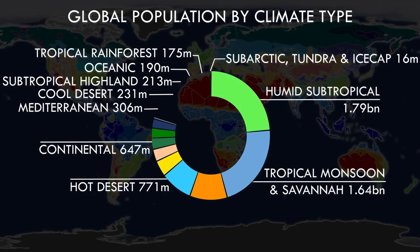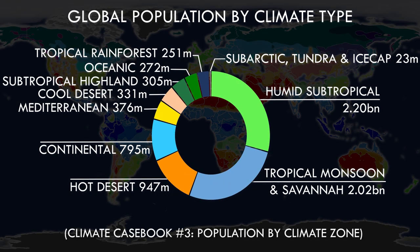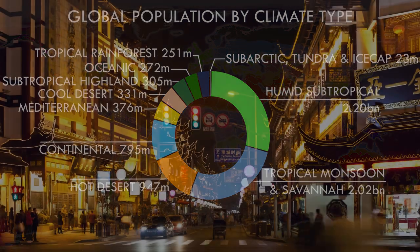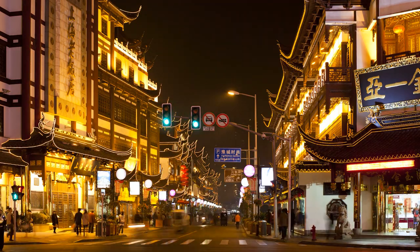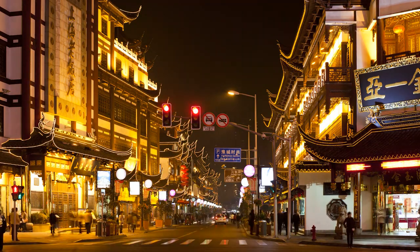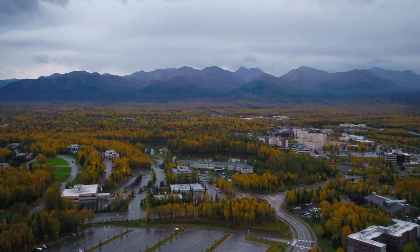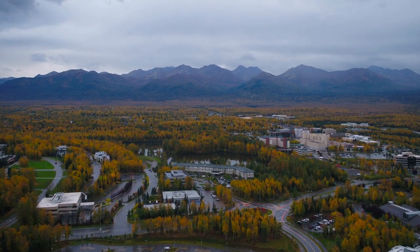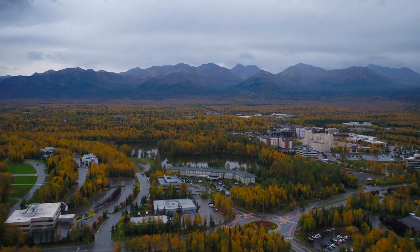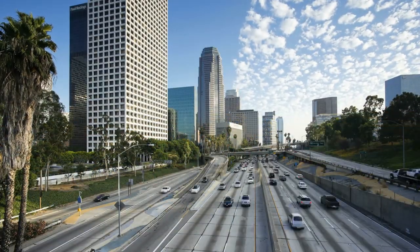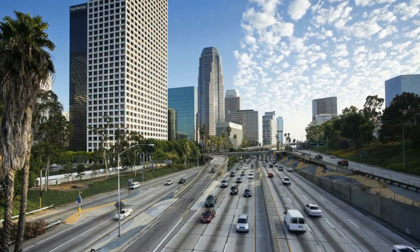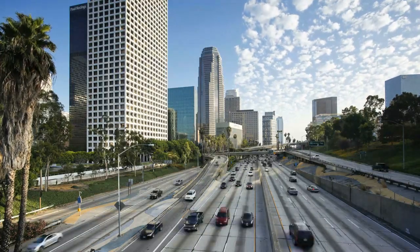Following the episode on population distributions across climate zones, there were a number of requests to reveal perhaps the most telling of statistics – how climate might determine the number of people that can be supported in a given unit area. This would reveal which climate zones are favourable to human settlement and which ones are adverse – in short, the respective habitability of each climate zone. So, without further ado, I now present the list of least and most densely populated climate zones on Earth.